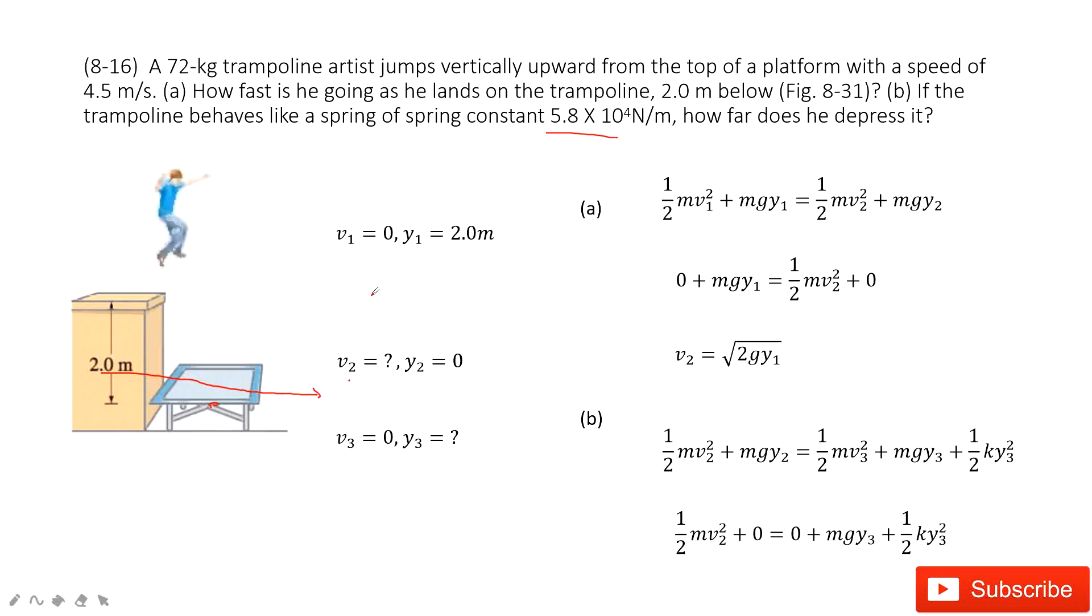In this process, when we solve problems, we need to consider the energy is conserved. So first of all, we need to find V2. So that means from the initial state to state 2. In this case, only the gravity does the work. Gravity is conservative force. So the mechanical energy is conserved. So we can see initial kinetic energy plus initial potential energy equals the final kinetic energy plus the final potential energy.